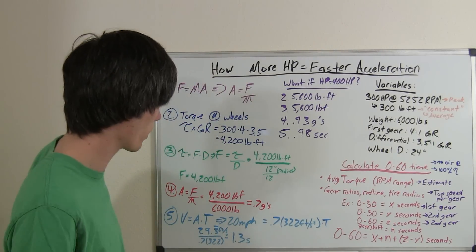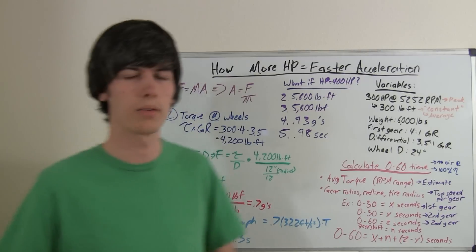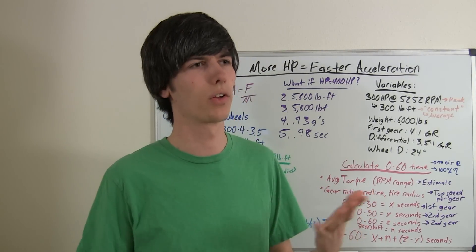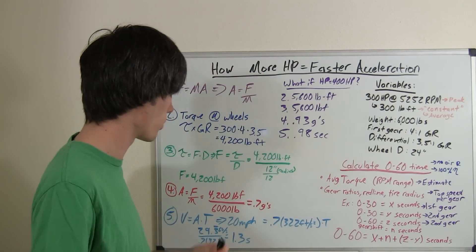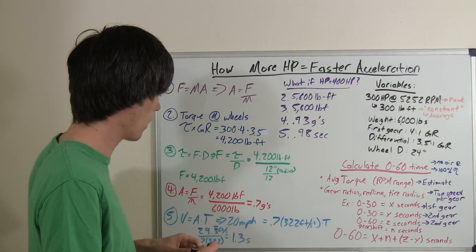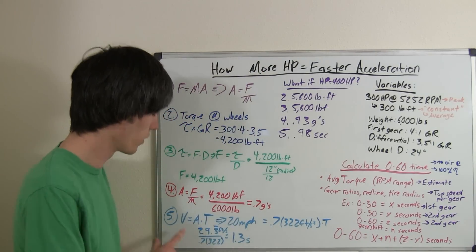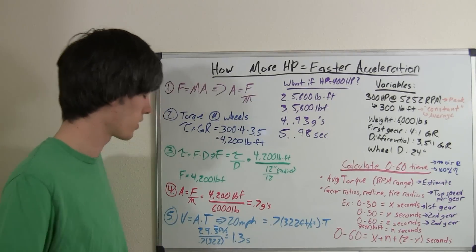And so, now what we want to do is figure out, well, what does that mean? Pretty much everyone's only interested in things like 0 to 60 times. Now, we're just going to calculate at 20 miles an hour. How quick it takes, how long it takes to get to 20 miles an hour. So, we know velocity equals acceleration times time.